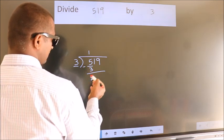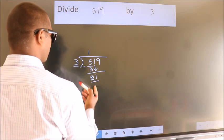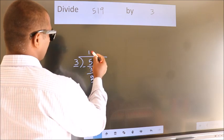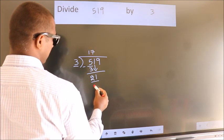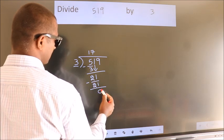After this, bring down the beside number. So, 1 down, making 21. When do we get 21? In 3 table: 3 7s 21. Now, we subtract. We get 0.